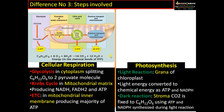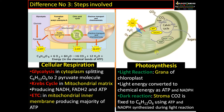In photosynthesis there are two reactions: light reaction and dark reaction. The light reaction occurs in the grana of the chloroplast — each individual unit is called a thylakoid. Light reaction occurs on the thylakoid membrane where pigments and photosystems absorb light energy and convert it to chemical energy as ATP and NADPH. During the dark reaction, this ATP and NADPH are utilized to fix carbon dioxide into carbohydrates or sugar, and that occurs in the stroma of the chloroplast.